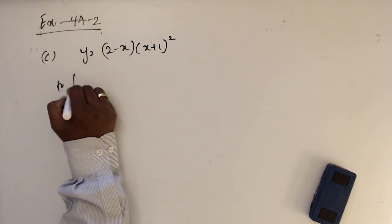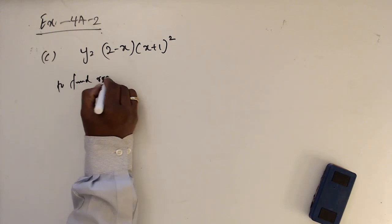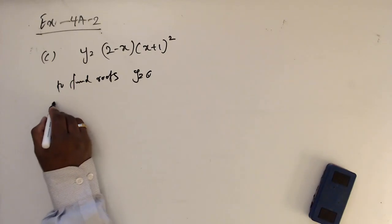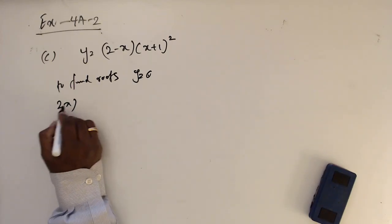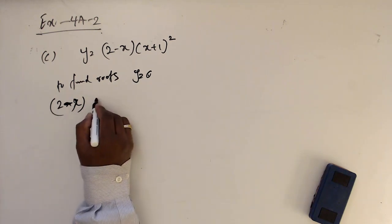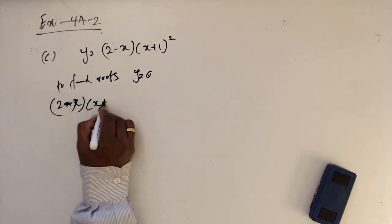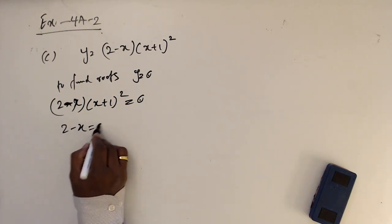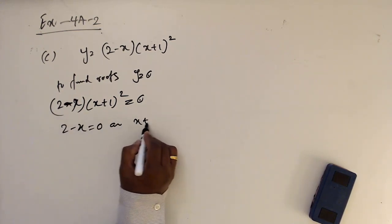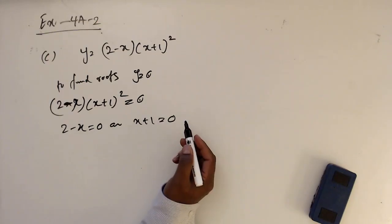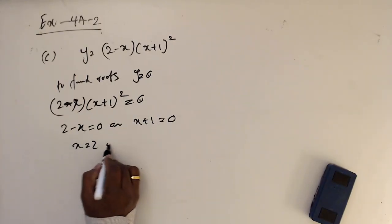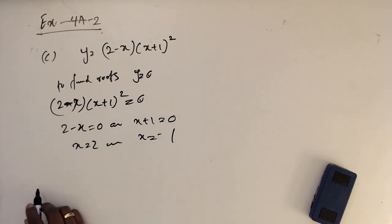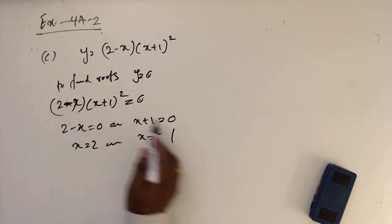For part C, to find roots make y equal to 0: (2-x)(x+1) squared equals 0. So 2-x equals 0 or x+1 equals 0, giving x equals 2 or x equals minus 1. We have a simple root at x equals 2 and a repeated root at x equals minus 1.